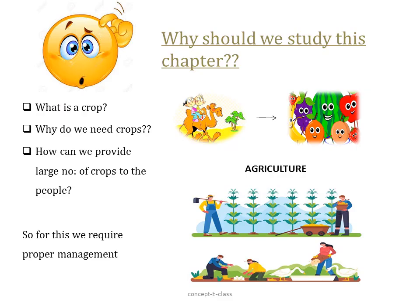Why should we study this chapter on crop production and management? The questions that pop in our mind are: what is a crop, why do we need crops, and what do we mean by crop production and management? We need food such as rice, maize, and paddy, and we get all this food through the process called agriculture. Agriculture is a process of cultivating land and producing rice, wheat, and other food crops. Through agriculture we can produce a large amount of food, and for that we require proper management and distribution. In this entire chapter, we will be studying about these agricultural practices.